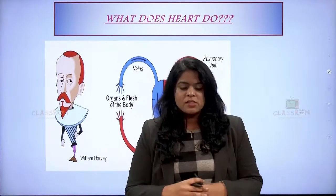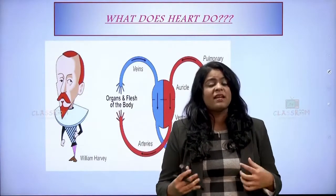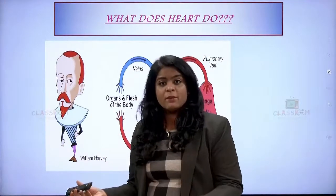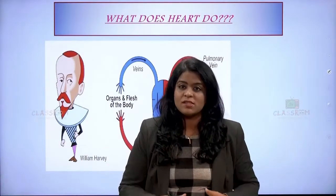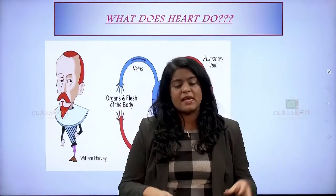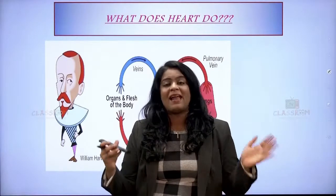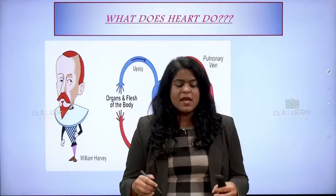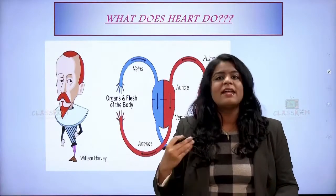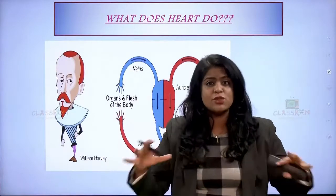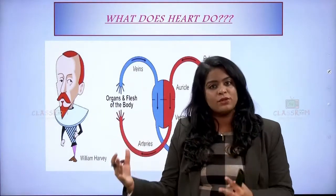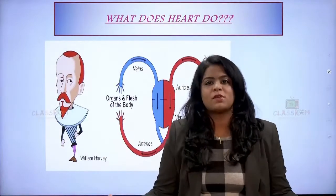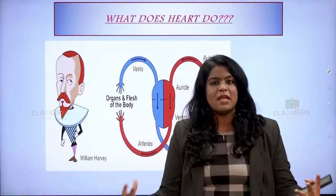Deoxygenated blood means the blood that has carbon dioxide. We cannot have blood with carbon dioxide circulating — it's a waste product and you need to purify the blood. What the heart does is when it receives deoxygenated blood it sends all of this blood to the lungs where it's purified. Now the blood has oxygen. We really need oxygen in the blood because even at the cellular level, for the organism to stay alive it needs oxygen. So the lungs purify the blood and send it back to the heart, from which it is distributed to all parts of the body.